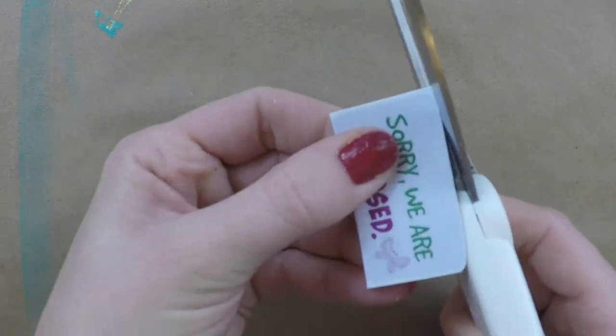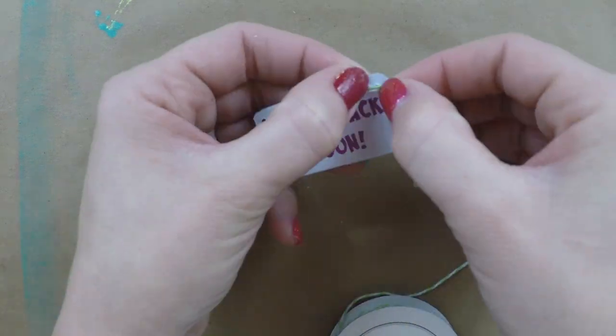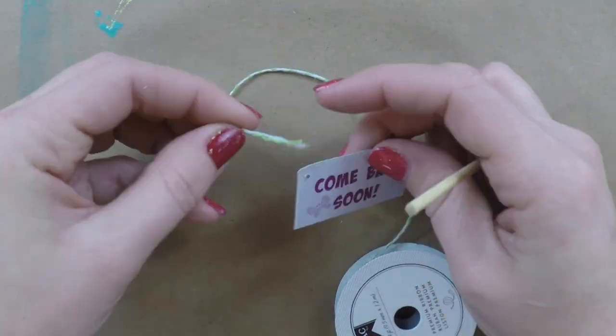Again, if you're doing this on regular paper, you can just glue it onto the paper board. Punch two holes in it so you can string it so it can hang on your door.